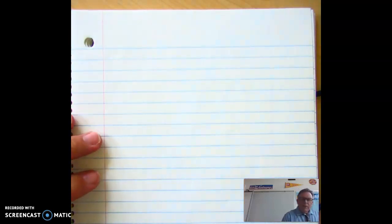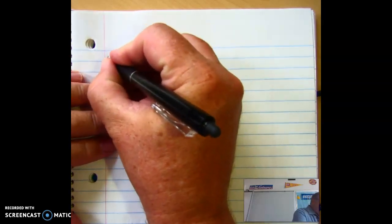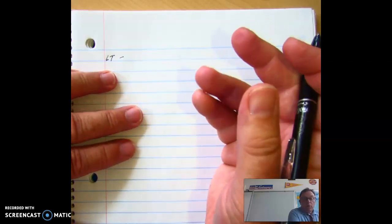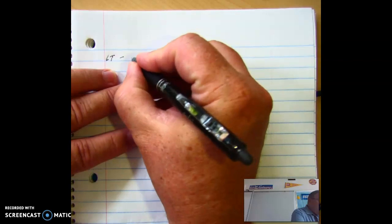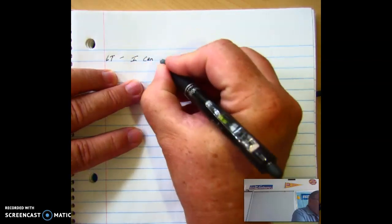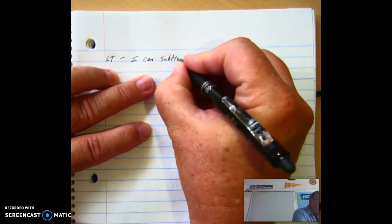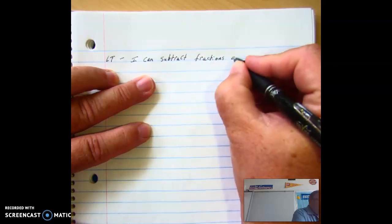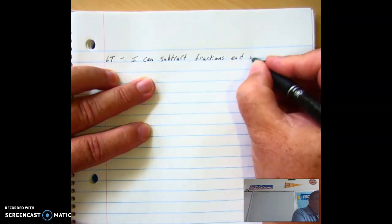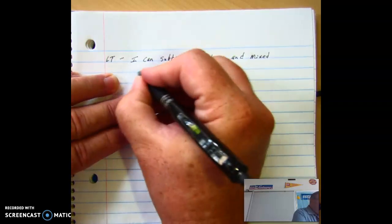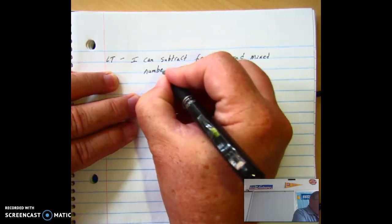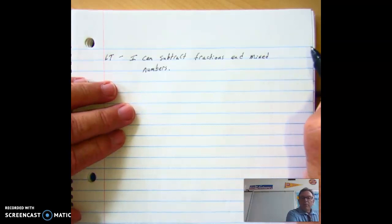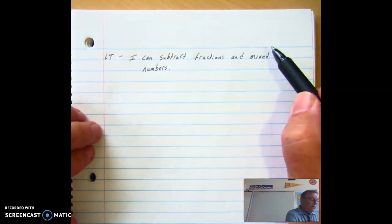Okay everybody, Mr. Rogowitz here. So our learning target for today is we're going to build on what you did yesterday. So yesterday you worked on adding fractions, so today I can subtract fractions and mixed numbers. Probably we're going to do a lot more with mixed numbers than fractions, so it's really critical to get that in there. Also remember, let's go ahead and put the 8 up here in the corner, so you're sure exactly when we're doing this.